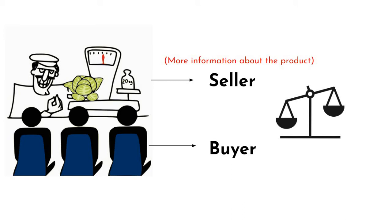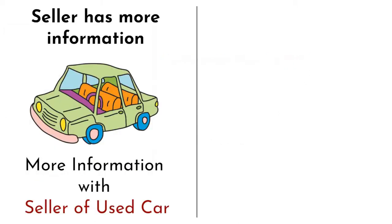It could be either the seller or the buyer who possesses more information in the transaction. Let us look at some examples. In the case of selling a used car, the seller has more information about the history and condition of the car. The seller can exploit this information imbalance to sell the car at a higher price than its fair value.